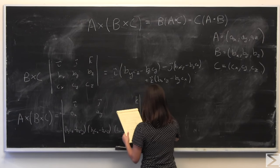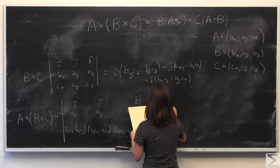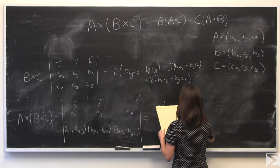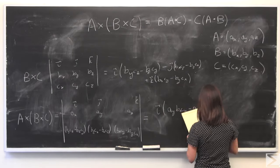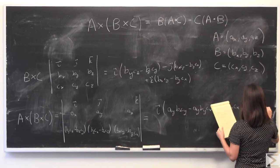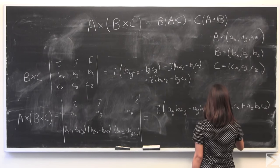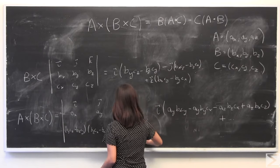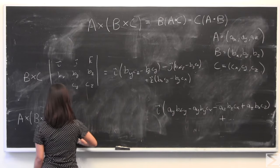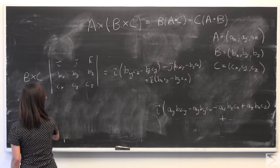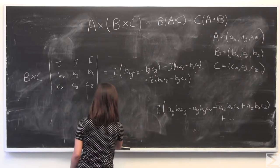But for now, there are quite a few terms here. And for now, I will write plus dot dot dot. And just know that those would include the same procedure done with i for j and k.